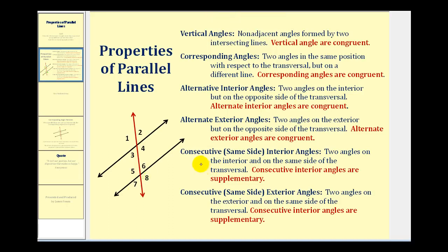And for the last two, we have consecutive interior angles, or same side interior angles. These are two angles on the interior and on the same side of the transversal, and these angles are supplementary. Remember, supplementary angles have a sum of 180 degrees. So angle four and angle six are consecutive interior angles, as well as angle three and angle five, and these angles are supplementary.